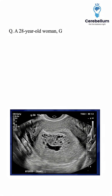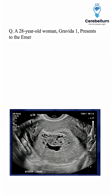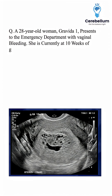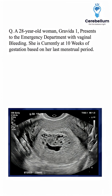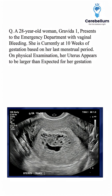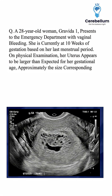A 28-year-old woman, Gravida 1, presents to the emergency department with vaginal bleeding. She is currently at 10 weeks of gestation, based on her last menstrual period. On physical examination, her uterus appears to be larger than expected for her gestational age, approximately the size corresponding to 12 weeks.